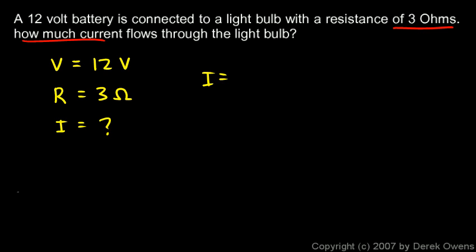We can use the equation in this form: I equals V over R. And we just put in the numbers that we know. V is 12 volts, R is three ohms. And when we divide, we get four, and the current is in amps. We use the symbol A for amps or amperes.